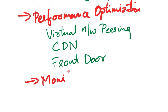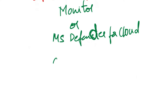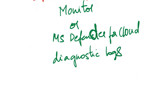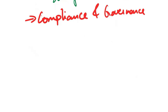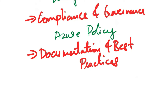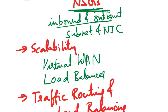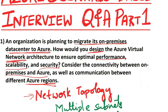For monitoring and logging, implement Azure Monitor or Microsoft Defender for Cloud for continuous monitoring of network performance and security. Enable diagnostic logs for Azure resources to capture detailed information for troubleshooting. For compliance and governance, ensure compliance with industry standards and regulatory requirements, and implement Azure Policy to enforce organizational standards. Document your virtual network architecture and configurations, and follow Azure networking best practices. By carefully planning and implementing these considerations, you can design an Azure virtual network architecture that meets your organization's performance, scalability, and security needs for on-premises to Azure connectivity and communication between different Azure regions.